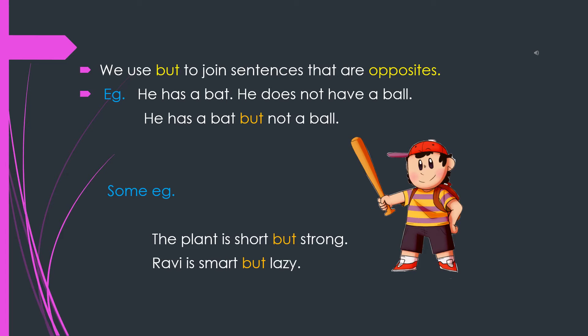Let us see the examples. The sentence: he has a bat. Another sentence: he does not have a ball. So here the boy has a bat but does not have a ball. Now let us join the sentence: he has a bat but not a ball.